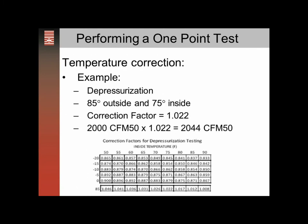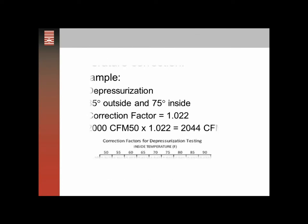As an example, using 85 degrees outside and 75 degrees inside, we would have 1.022 as our correction factor. 2000 times that correction factor gives us 2044 — so about a 2.2% correction at 85 degrees.